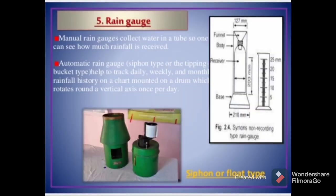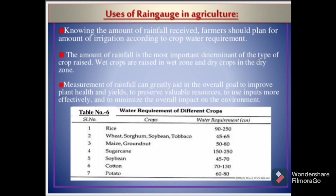Rain gauge: manual rain gauges collect water in a tube so one can see how much rainfall is received. Automatic rain gauges, siphon type or tipping bucket type, help to track daily, weekly, and monthly rainfall history on a chart mounted on a drum which rotates around a vertical axis once per day. Figure 2.4 shows Simon's non-recording type rain gauge.